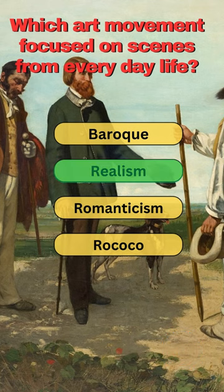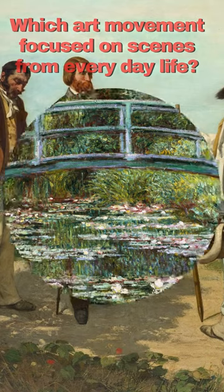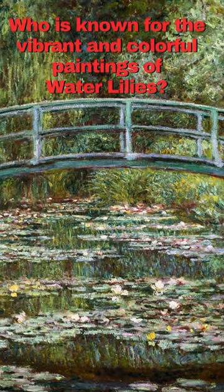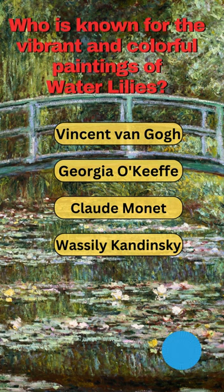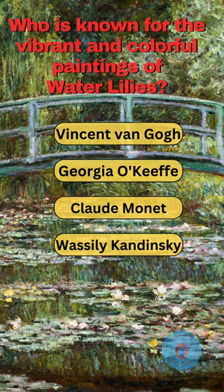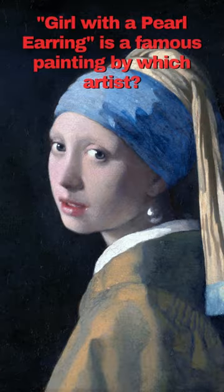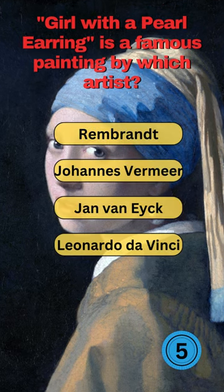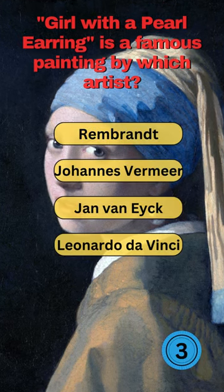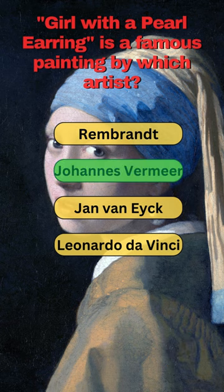The answer is Realism. Who is known for the vibrant and colorful paintings of Water Lilies? The answer is Claude Monet. Girl with a Pearl Earring is a famous painting by which artist? The answer is Johannes Vermeer.